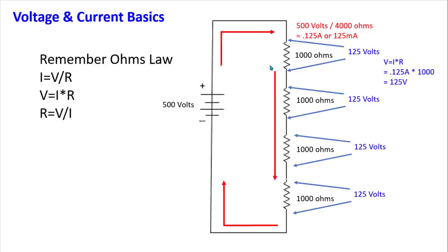Remember: regardless of the component values in a single series circuit, the current flowing out of the battery or power supply and the current flowing back into it is identical. That means the current flowing through all the resistors is the same, regardless of their individual values.